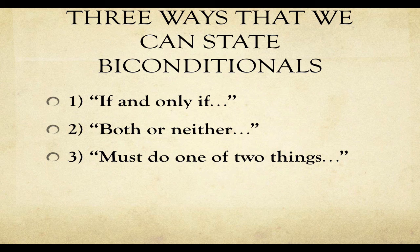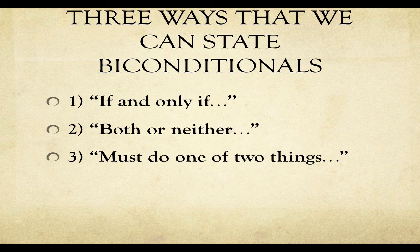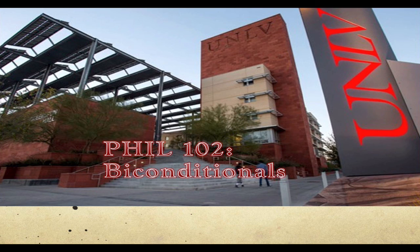Hopefully that was enough to clarify it. Don't look for overly simplistic, absolute rules for patterns in the symbols — it's fluid, it's language. Get in the habit of looking at the plain, ordinary meaning of the words. When the words mean 'both or neither,' 'must do one of two things,' or 'if and only if,' you've got a biconditional. If you have any questions, you know where to find me. Thanks for your time.